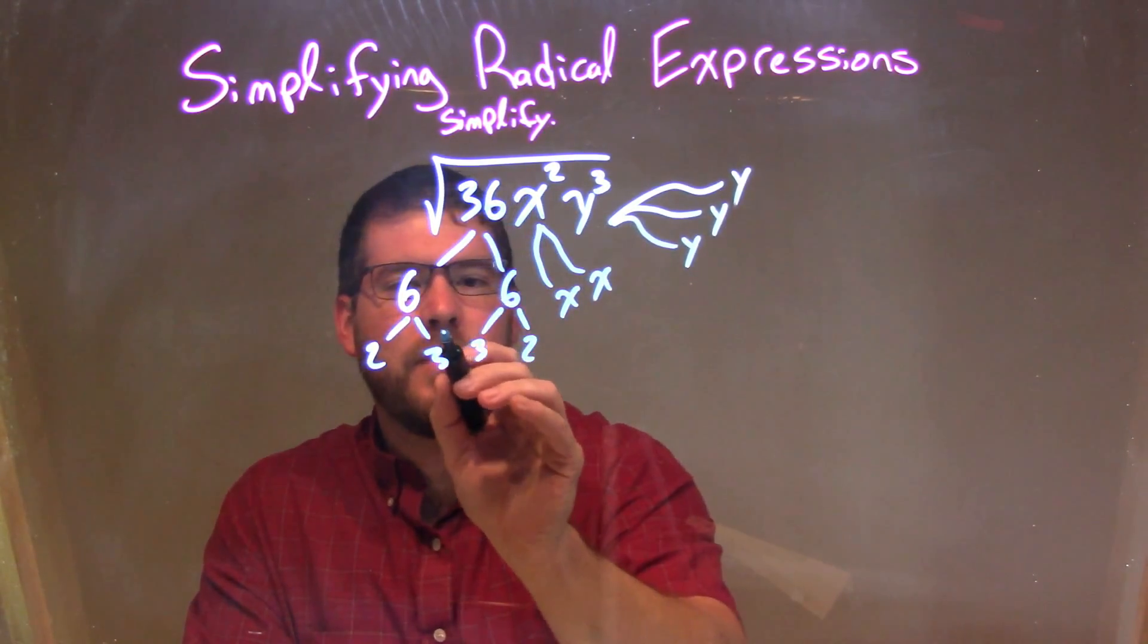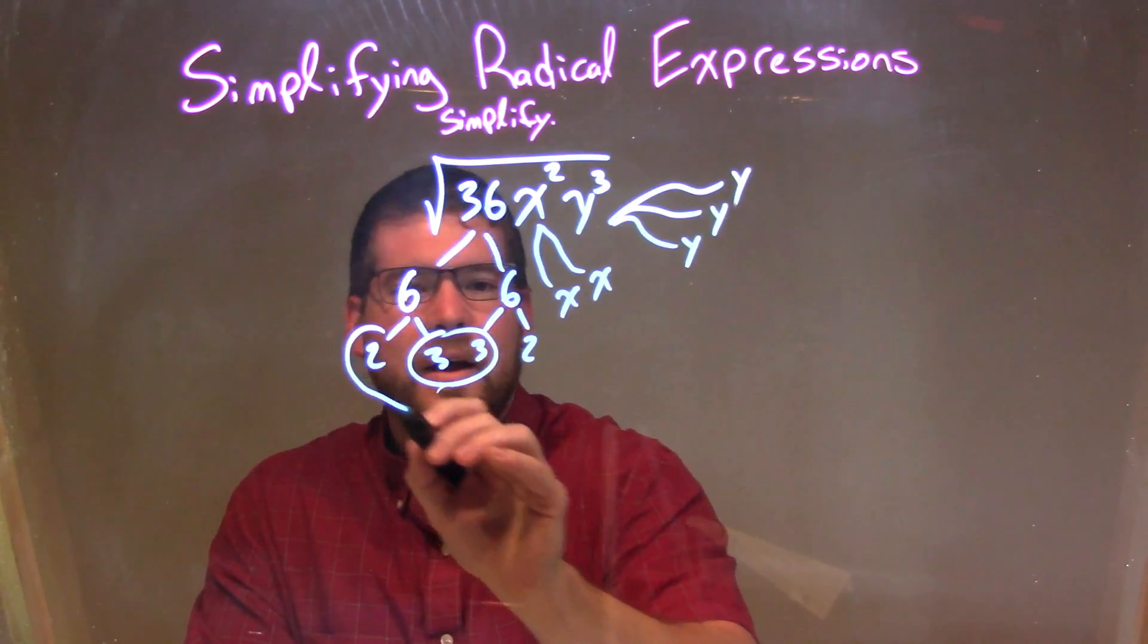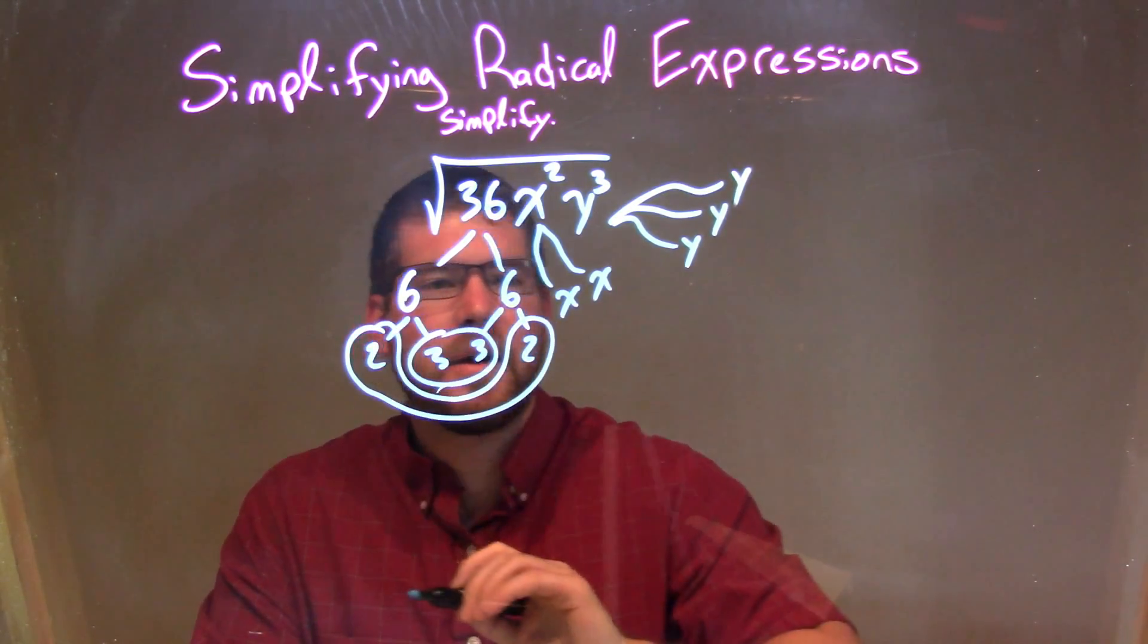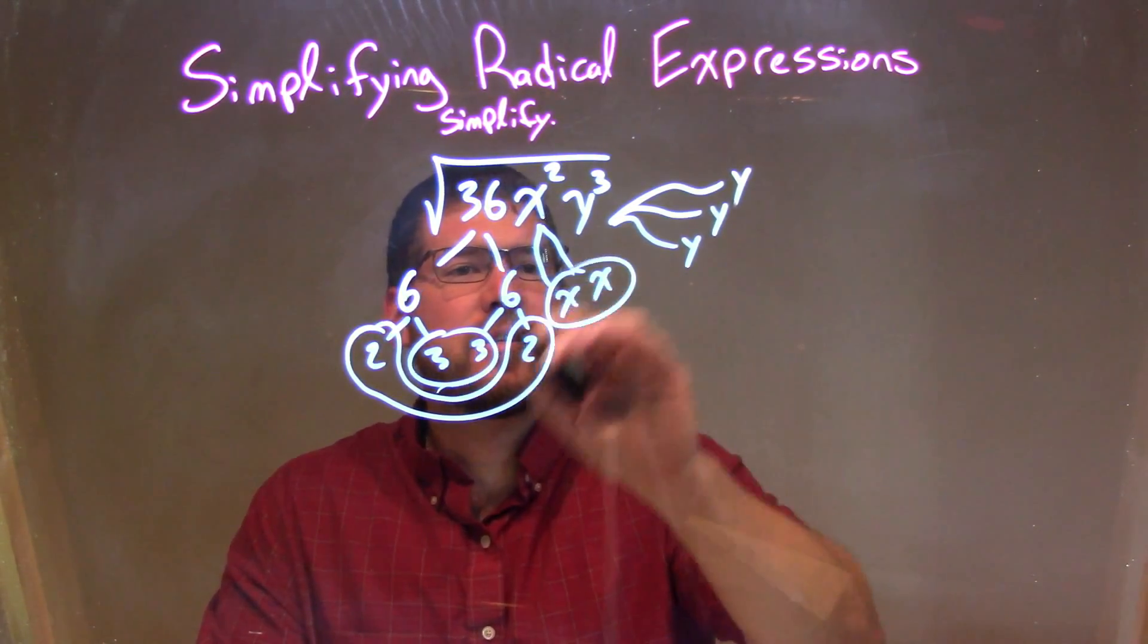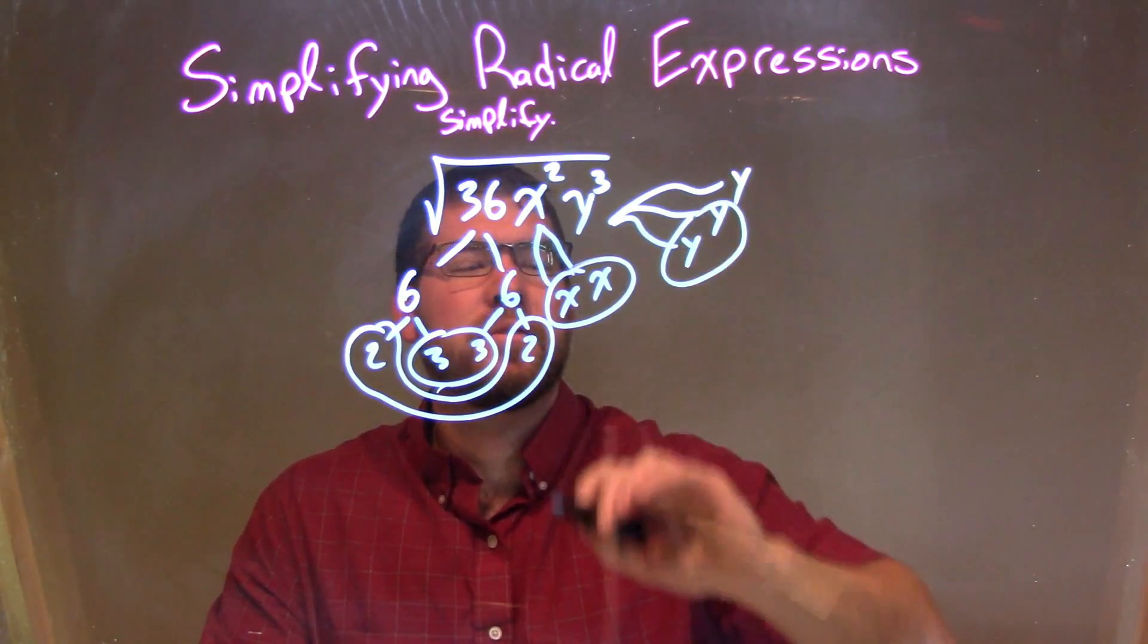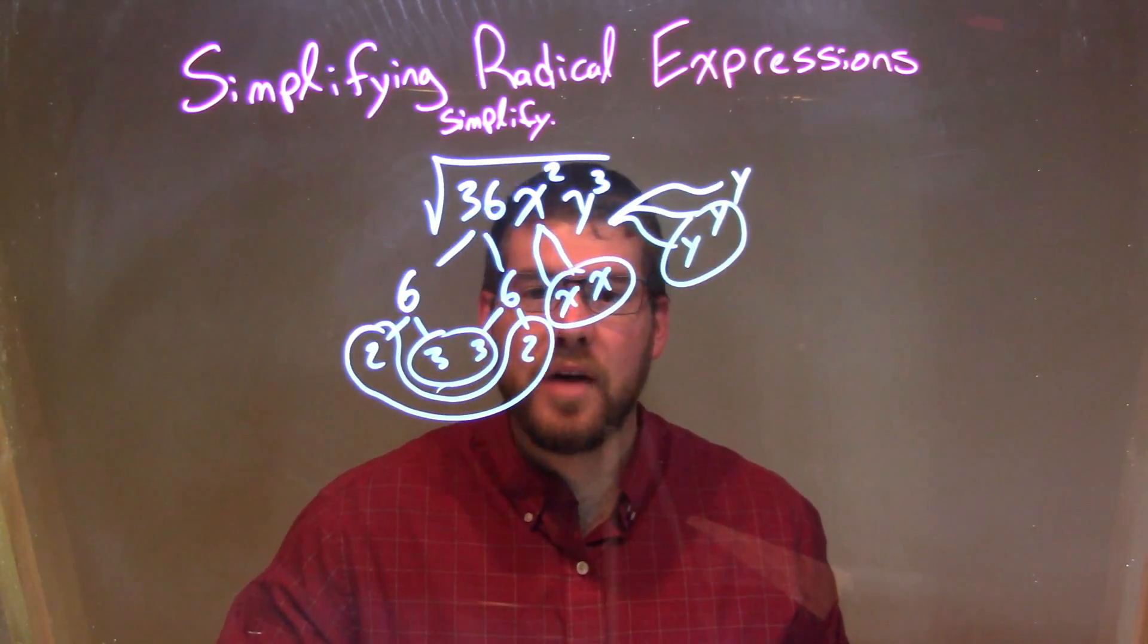Let's go circle our pairs. Let's see a pair of 3s, a pair of 2s right there, kind of a weird circle, a pair of xs, and a pair of ys, and there's the one lone ranger y by himself.